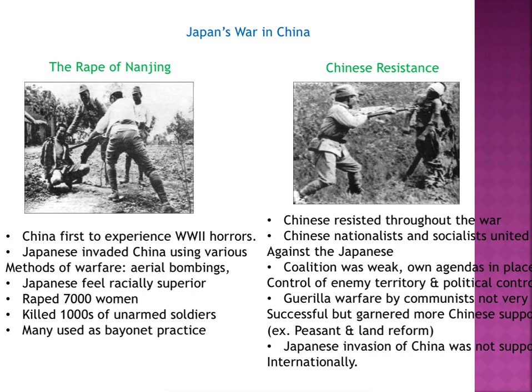The Chinese resisted throughout the war. Chinese nationalists and socialists united against the Japanese. Remember, during this time China was having internal political problems — going back and forth on what kind of government to have. Some supported a democratic government, others a socialist or communist government. But when the Japanese came in and began to attack, they said, let's put our disagreements aside and work on a united front together.